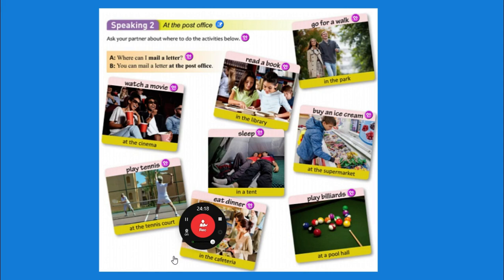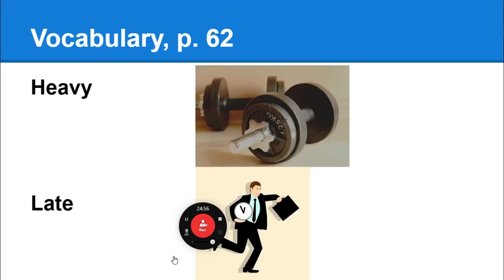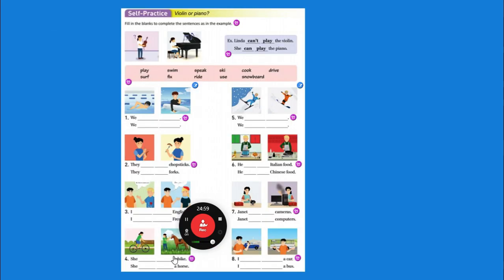Remember your dialogue structure: where can I do whatever it is — you can do something at the something. You can read a book in the library, go for a walk in the park, buy ice cream at the supermarket, sleep in a tent, play tennis at the tennis court, eat dinner in the cafeteria, or play billiards at a pool hall. Pool and billiards are pretty much the same game in English. Great job! When we come back we're going to work on the next page for self-practice. Have a wonderful day.